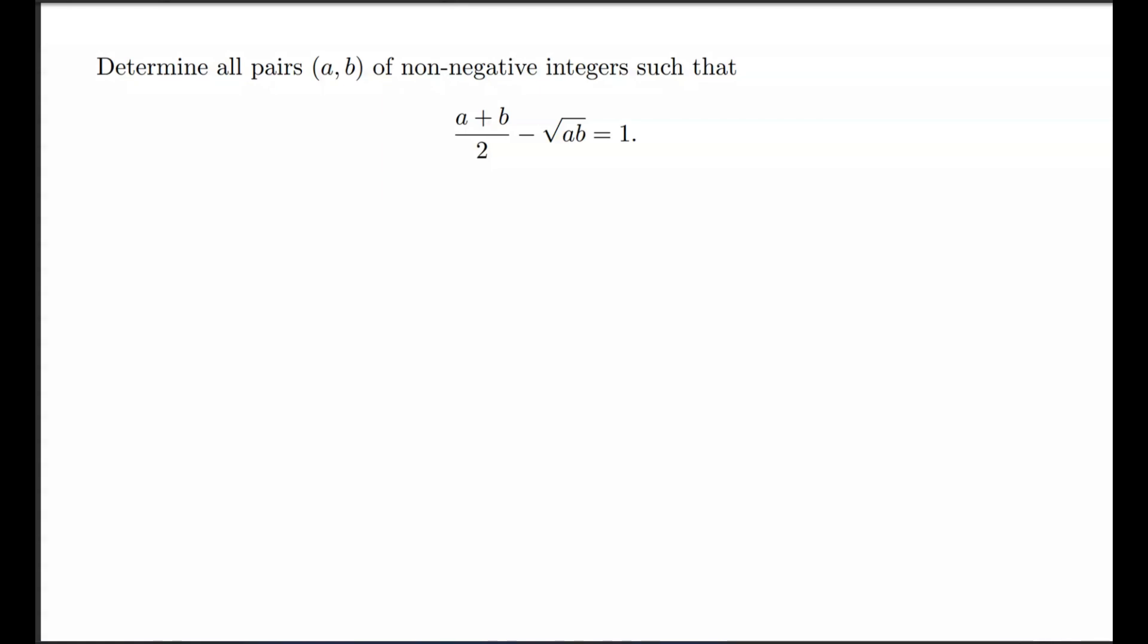The first thing we're going to do is double the equation. So we get a + b - 2√(ab) = 2. We have to notice that the left-hand side is just the expansion of (√a - √b)².